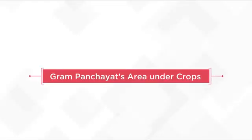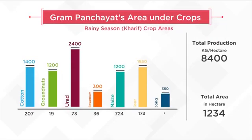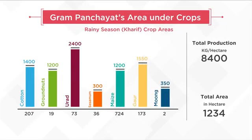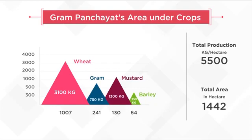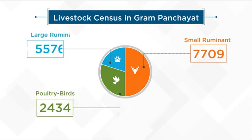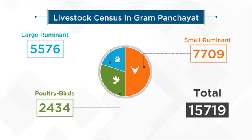Here we get information about the Gram Panchayat's area under various crops and productivity in rainy, winter and summer seasons. Based on this, a plan for supply of available water for irrigation can be developed for deserving farmers. From the perspective of livelihoods in rural areas, livestock has an important role. Information related to livestock helps in the selection of related activities during INRM planning, such as the development of grassland and provision for the supply of drinking water facilities.